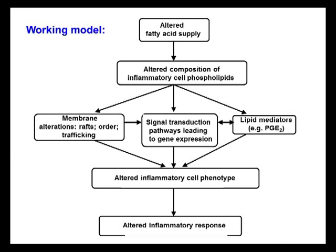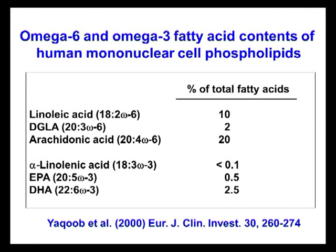Through changing cell behavior, the whole inflammatory response can be influenced. It's important to know something about the fatty acid composition of cell membranes. This slide shows the amounts of two different families of fatty acids in the membranes of mononuclear cells taken from healthy human volunteers — the three common omega-6 fatty acids and the three analogous omega-3 fatty acids. There is a higher amount of omega-6 than omega-3 fatty acids in these cells, and a particular abundance of one omega-6 fatty acid called arachidonic acid.